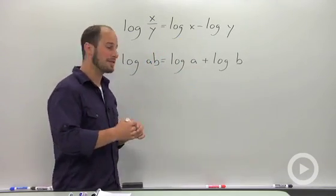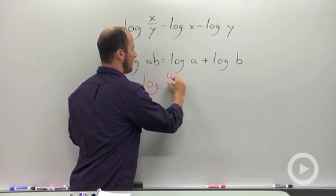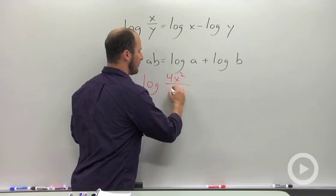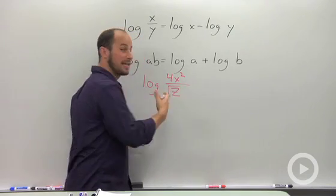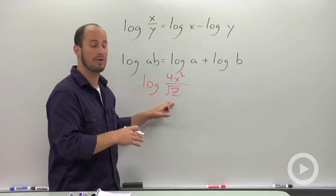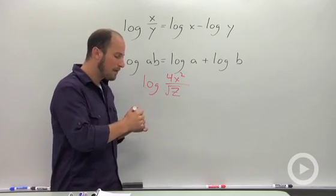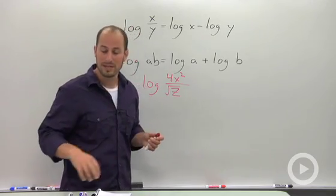How we're used to using this is if we're asked to expand log of x squared over square to z, something like that. We're used to splitting them up when we have four different components inside of our log, or multiple components in there. But we can also use this when we are just dealing with a single number.